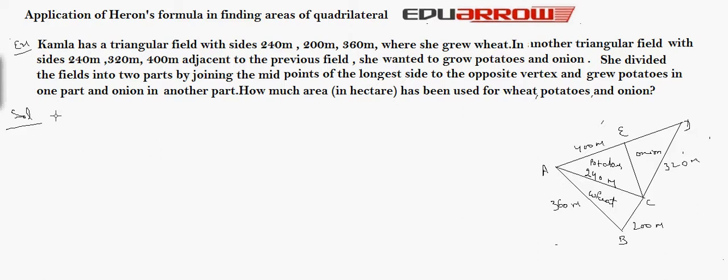Now find the area of triangle ABC. To find the area of triangle, we have the semi perimeter. The semi perimeter of triangle is equal to the sum of the sides, that is 200, 240 and 360 divided by 2. That is equal to 400 meters.